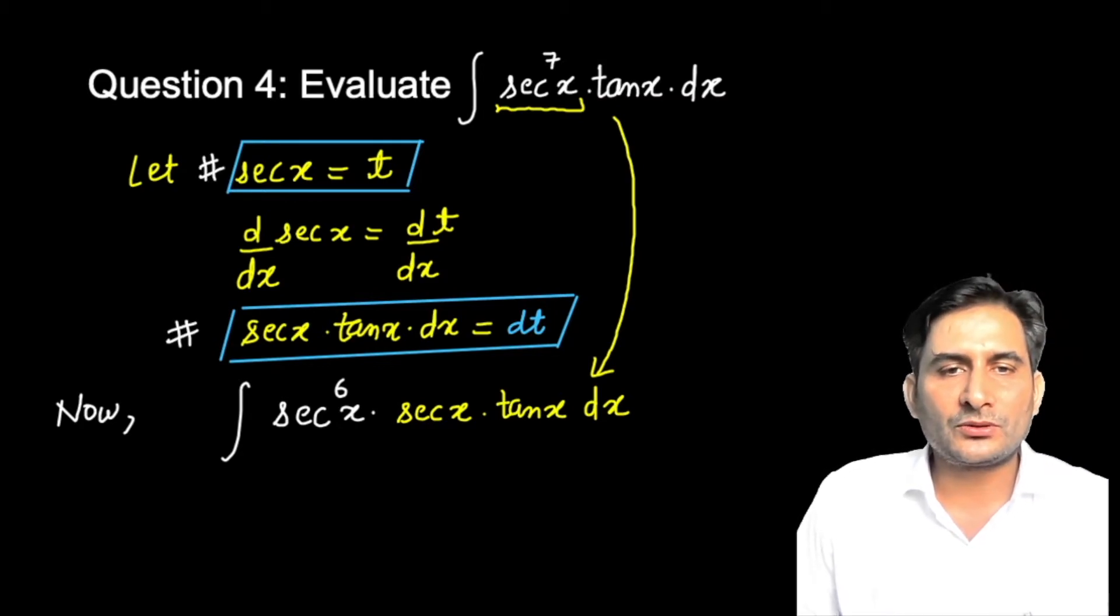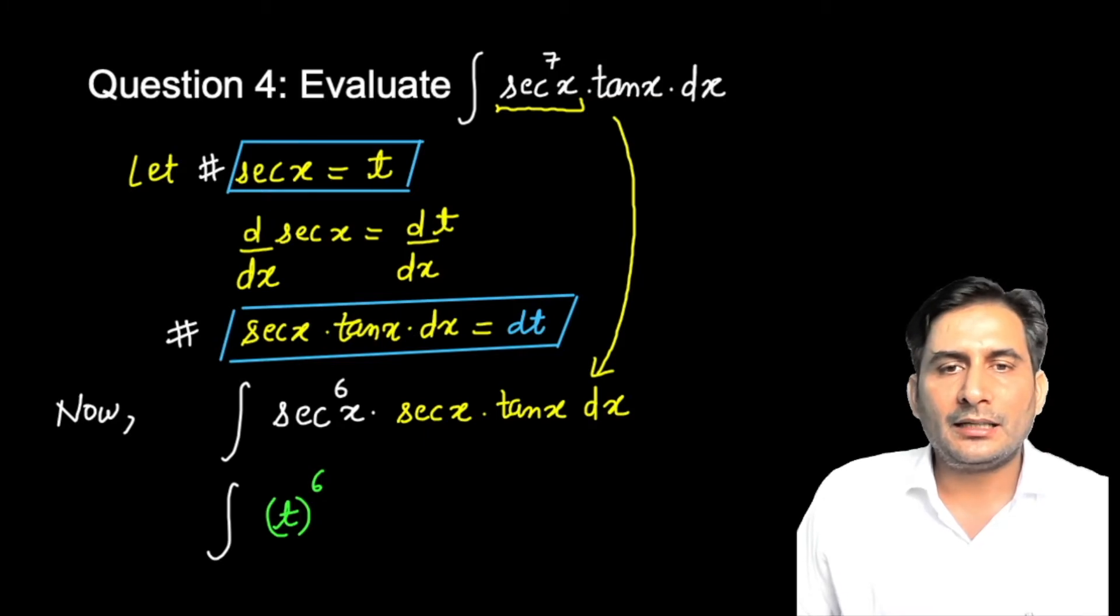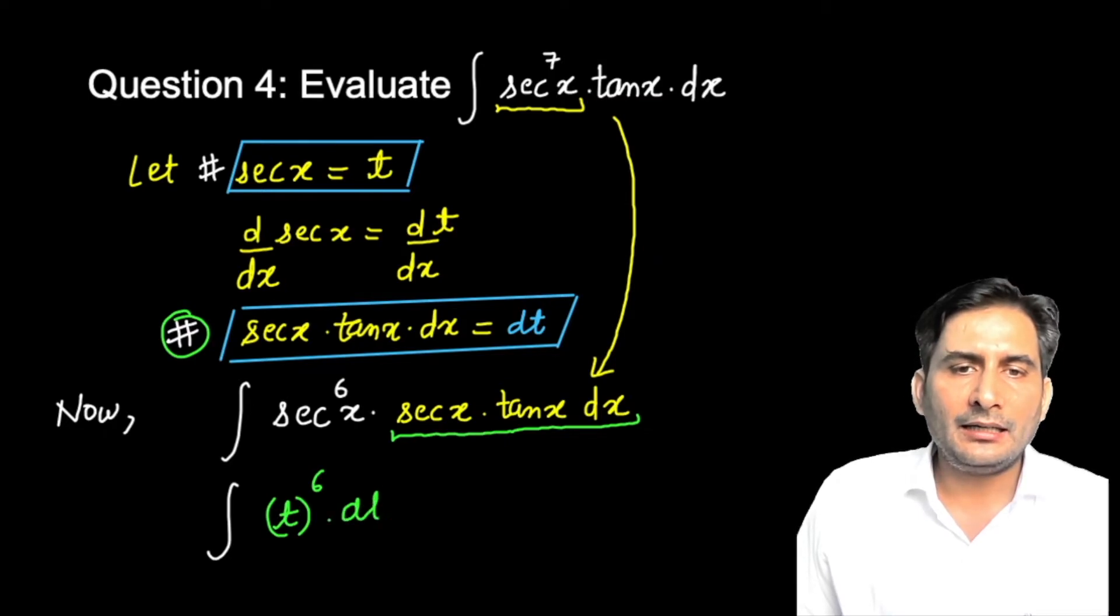Compare this and this. Sec(x) was let as t, so t to the power 6. Now look: sec(x) tan(x) dx - what did we get? Look here: dt. So place dt here.